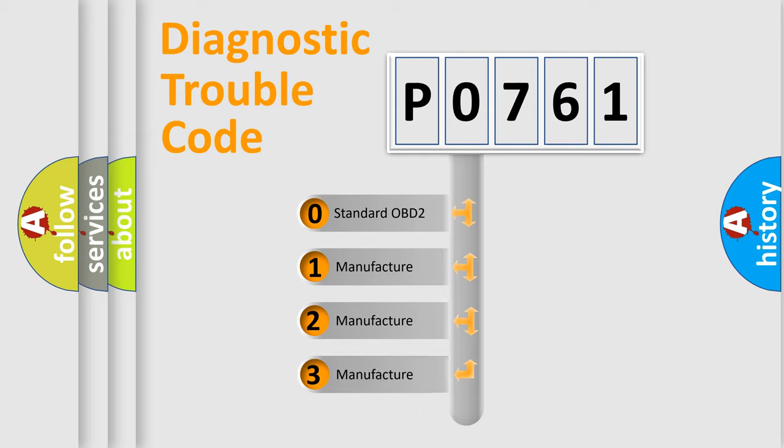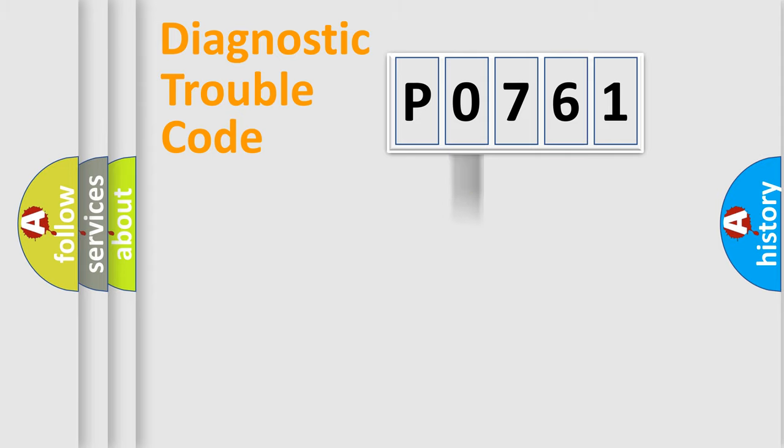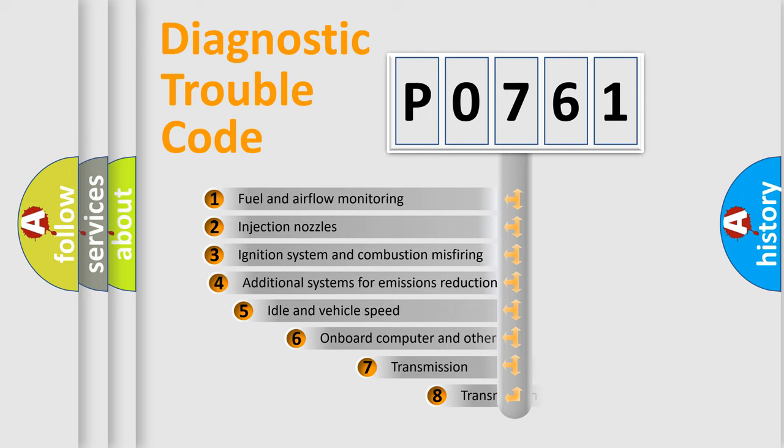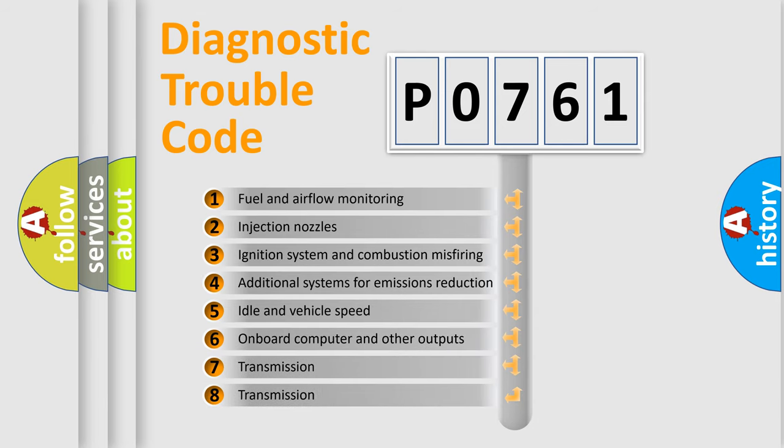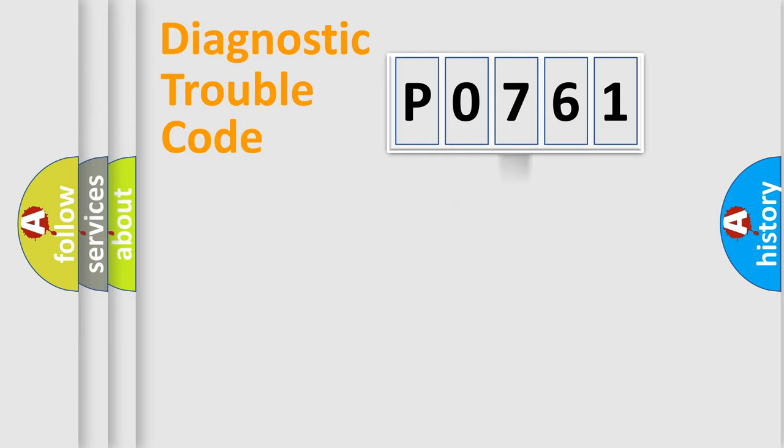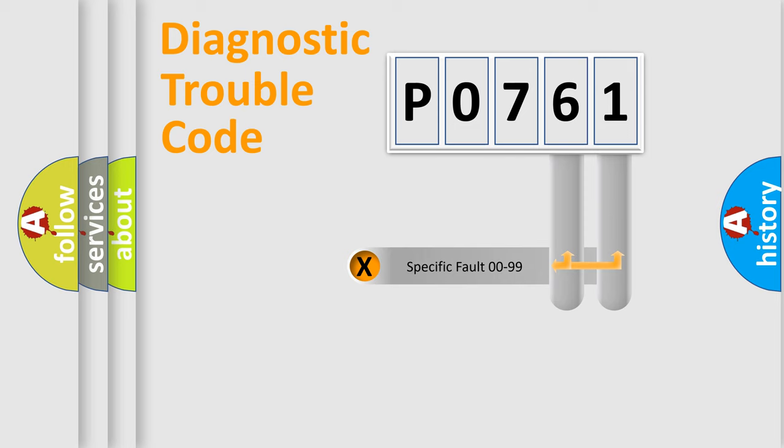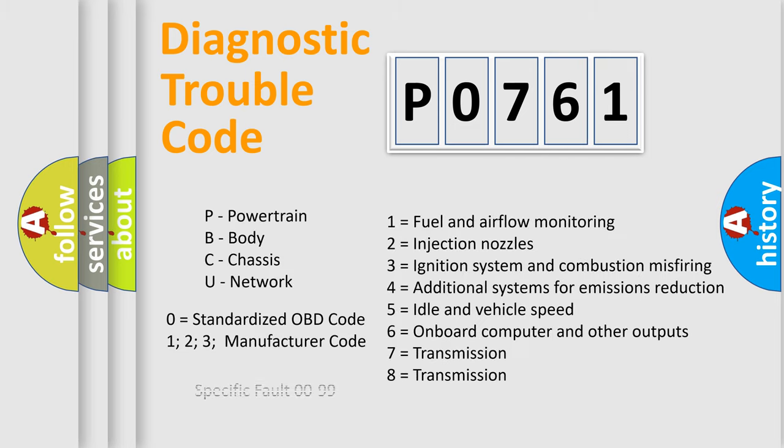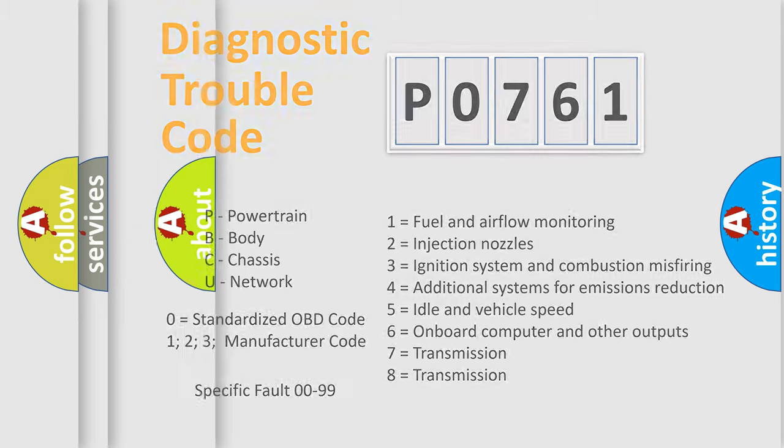If the second character is expressed as zero, it is a standardized error. In the case of numbers 1, 2, 3, it is a car specific error. The third character specifies a subset of errors. The distribution shown is valid only for the standardized DTC code. Only the last two characters define the specific fault of the group. Let's not forget that such division is valid only if the other character code is expressed by the number zero.